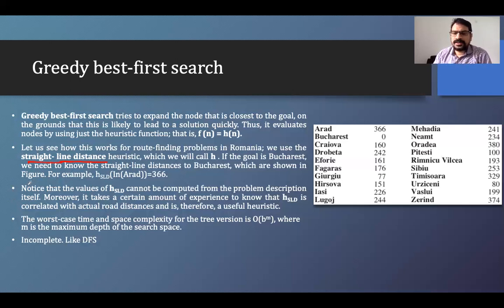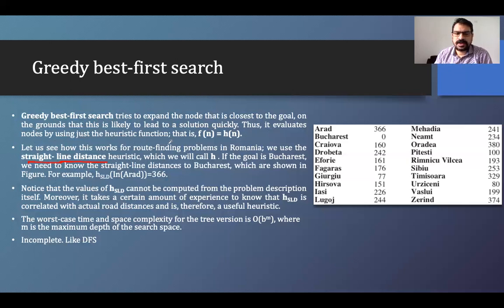The greedy best first search method tries to expand the node that is closest to the goal, on the grounds that this is likely to lead to the solution quickly. Thus it evaluates nodes using just the heuristic function f(n) = h(n), where h(n) is the heuristic value for a particular node n. Let's see how this works for a route-finding problem in Romania, using the straight-line distance heuristic, which we'll call h_SLD.